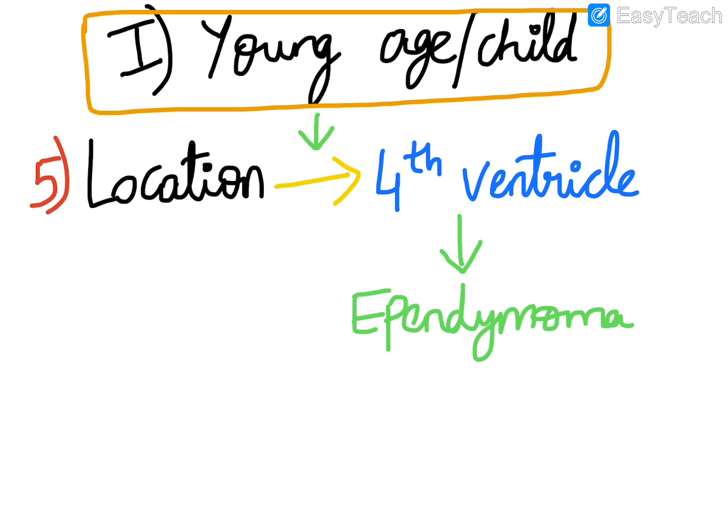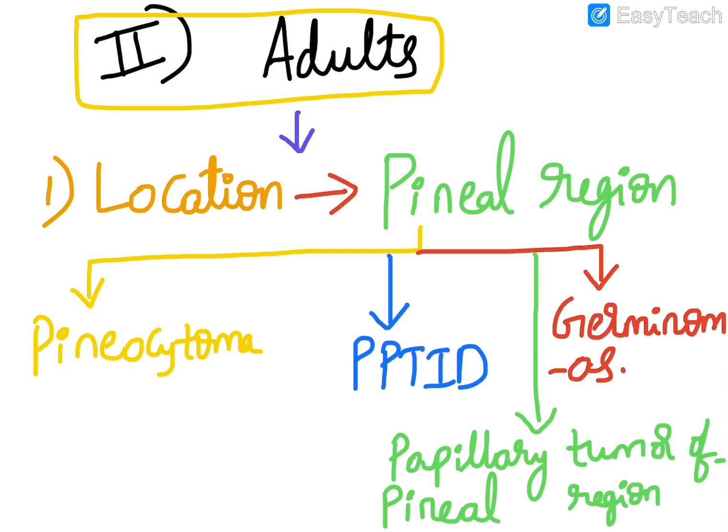Moving on to the next location in the pediatric age group, that is the fourth ventricle. In the fourth ventricle, the most common CNS tumor to arise in the pediatric age group is ependymoma. Moving on to the adult age group.